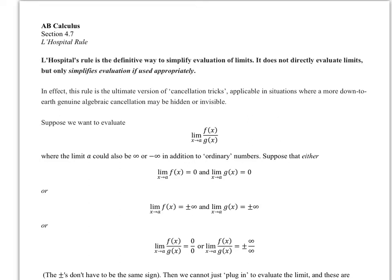4.7 on L'Hopital's Rule. We're going back to limits for this lesson, so get your mindset right as you jump into this. L'Hopital's Rule is a definitive way to simplify evaluation of limits. It is not directly evaluating limits, but only simplifies evaluation if used appropriately. In effect, this rule is the ultimate version of cancellation tricks — applicable in situations where a more genuine algebraic cancellation may be hidden or invisible.